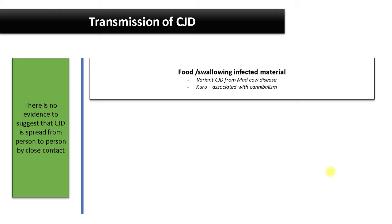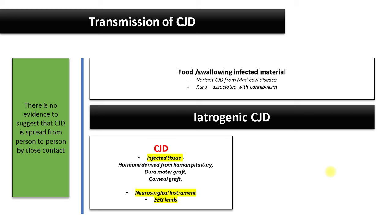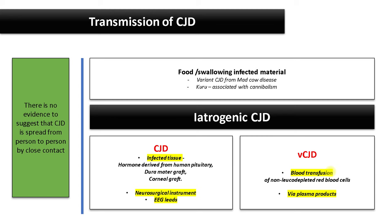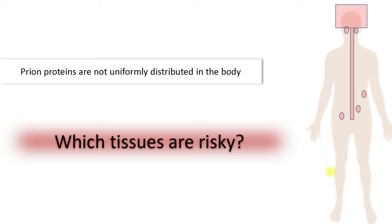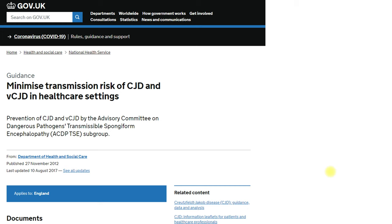There is no evidence that CJD can be transmitted from person to person by close or casual contact. Methods of transmission that have been reported include eating food contaminated with prion — for example, variant CJD is likely to have resulted from consuming contaminated meat products, and Kuru was associated with cannibalism. Iatrogenic CJD has been reported from the use of infected tissue such as human pituitary-derived growth hormones, dura mater grafts, corneal grafts, and use of contaminated instruments like neurosurgical instruments or EEG leads. We will now look at which tissues are considered high risk, medium risk, and low risk.